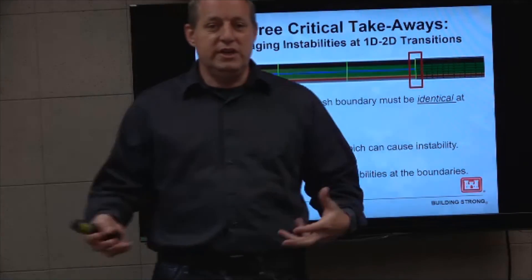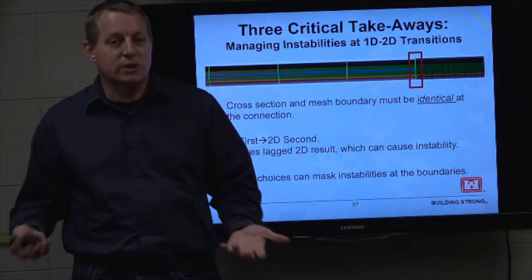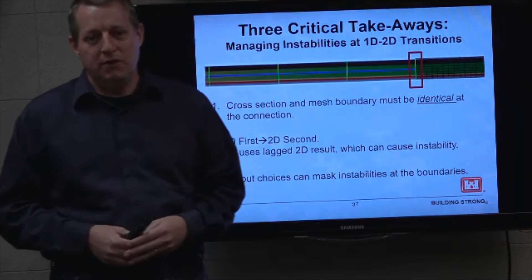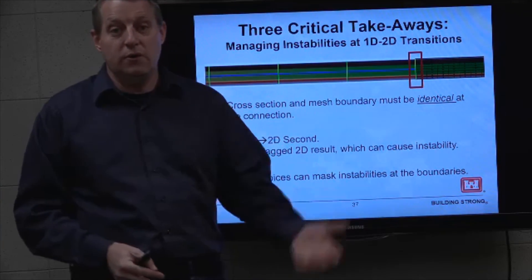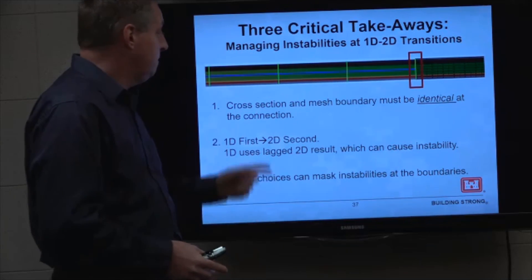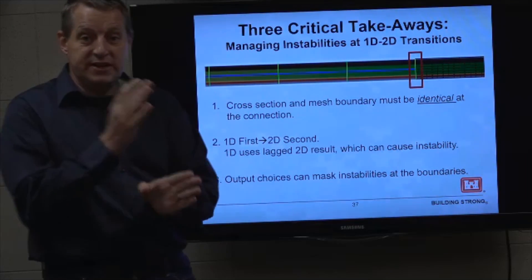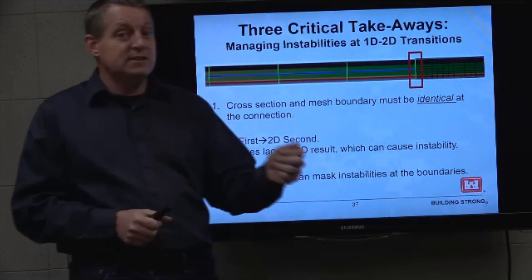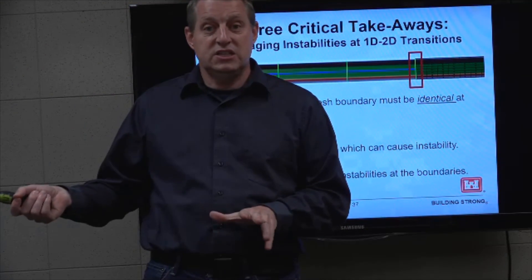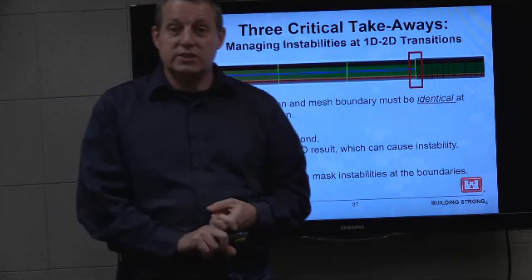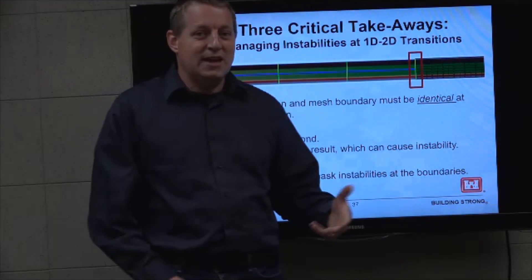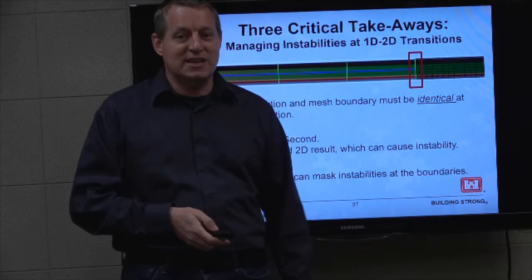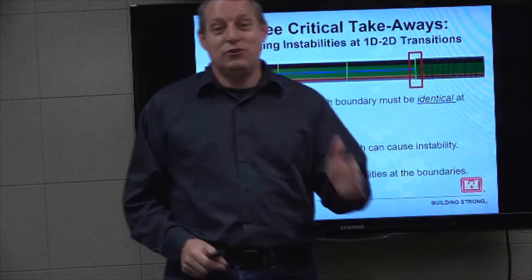You really want 1D/2D inline modeling in your toolbox because it's effective and useful in various settings. To get there, recognize the three potential pitfalls. First, resolve the spatial discontinuity — cross-sections and mesh boundaries must be identical in space and in station elevation data. Second, deal with the temporal discontinuity — when the 1D model runs it uses stale 2D stages, which is usually fine but sometimes requires decreasing the time step or iterating. Third, avoid output choices that mask problems — make sure output is at the same level as the computation increment so instabilities aren't hidden.